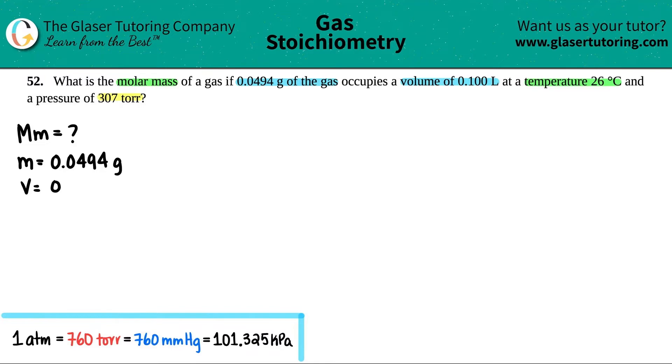So that's V, right? So I have a volume, 0.100 liters. They tell me I have a temperature of 26 degrees Celsius, and they give me a pressure of 307 torr.